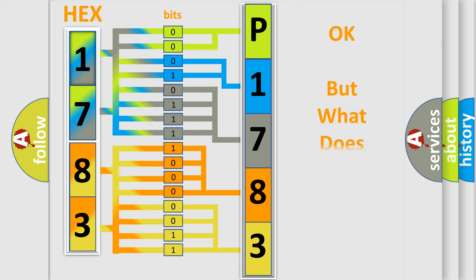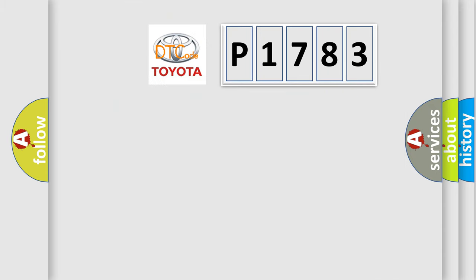We now know in what way the diagnostic tool translates the received information into a more comprehensible format. The number itself does not make sense if we cannot assign information about what it actually expresses. So, what does the diagnostic trouble code P1783 interpret specifically for Toyota car manufacturers?